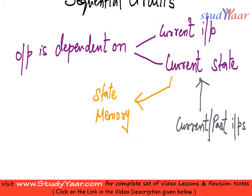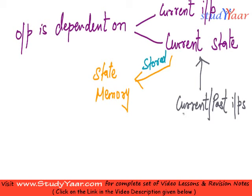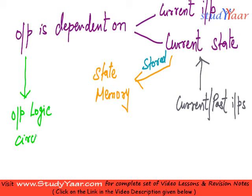In a sequential circuit, your current state is stored in state memory. Your output is determined by the output logic circuit. That's the terminology — we call this the output logic circuit. This is the circuit that determines what the output of your sequential circuit is.